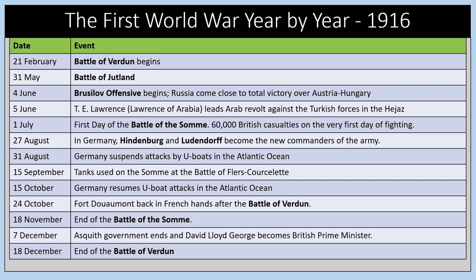In 1916, key events included the Battle of Verdun, the Battle of Jutland, and the Brusilov Offensive. The Battle of the Somme took place in 1916 with 60,000 British casualties on the very first day — the single worst day in the history of the British Army. Tanks were used for the first time at the Battle of the Somme in September 1916. In December 1916, the Asquith government ended and David Lloyd George became Prime Minister, and the Battle of Verdun concluded.